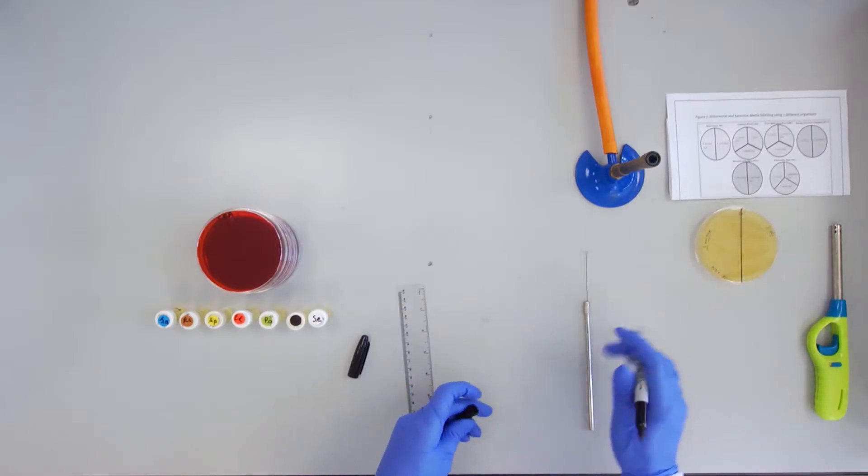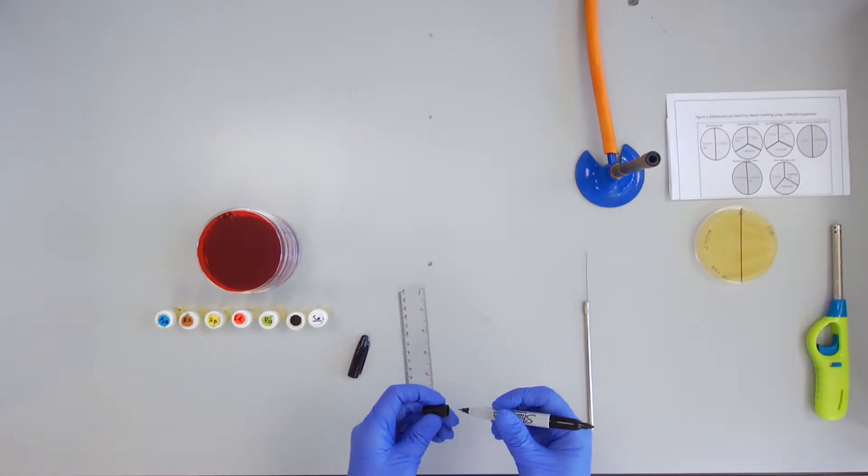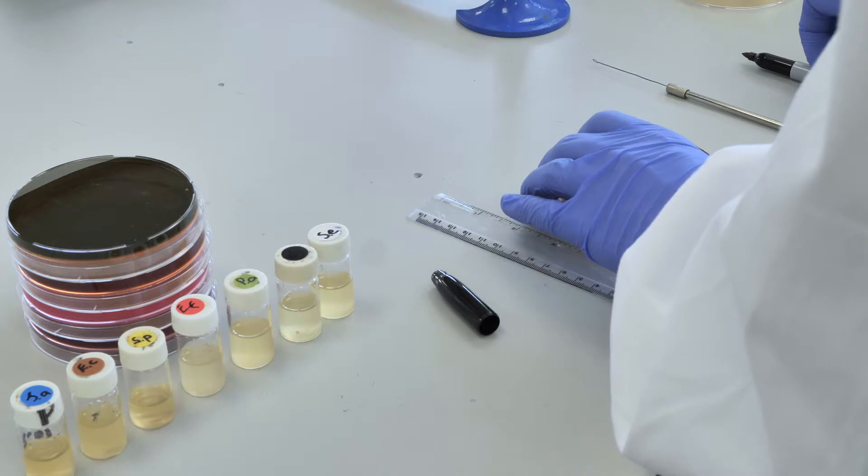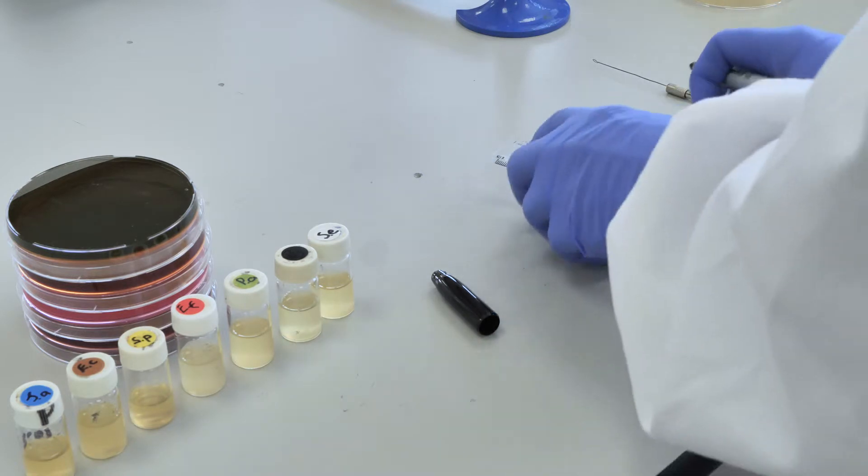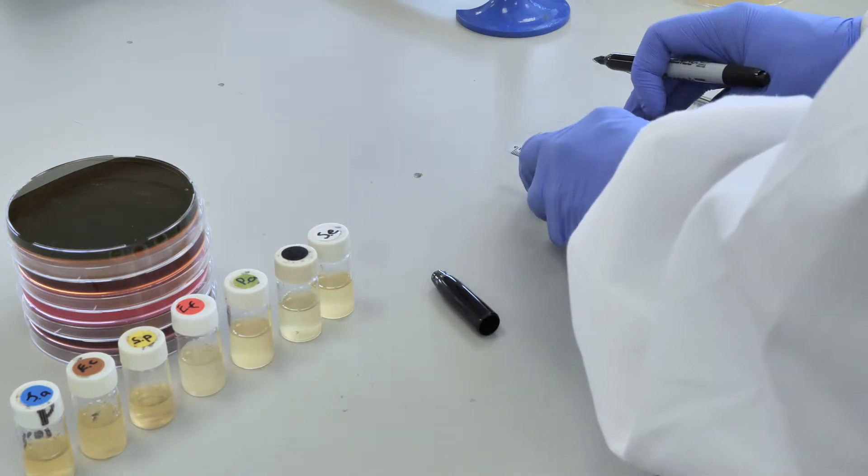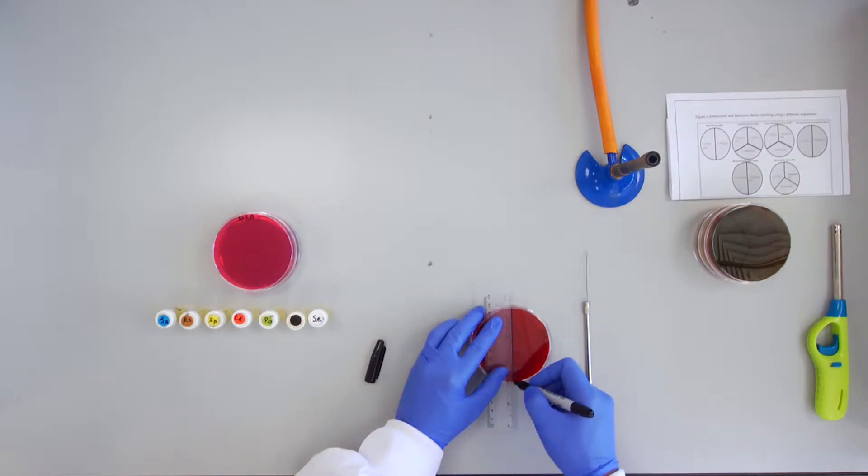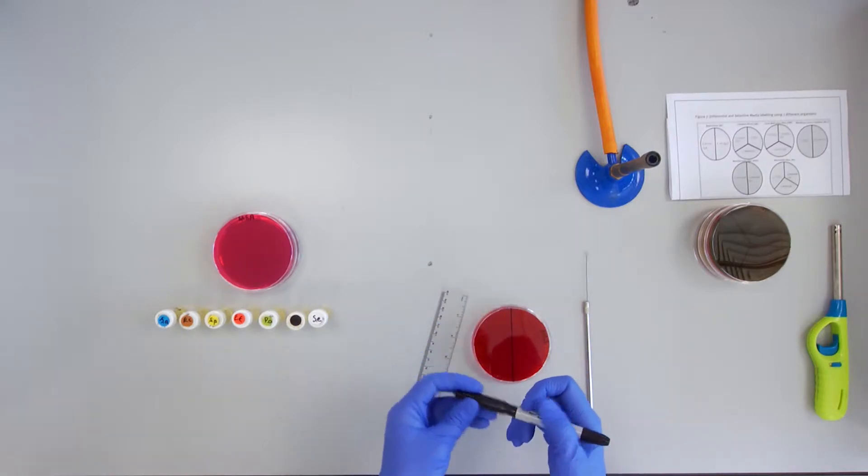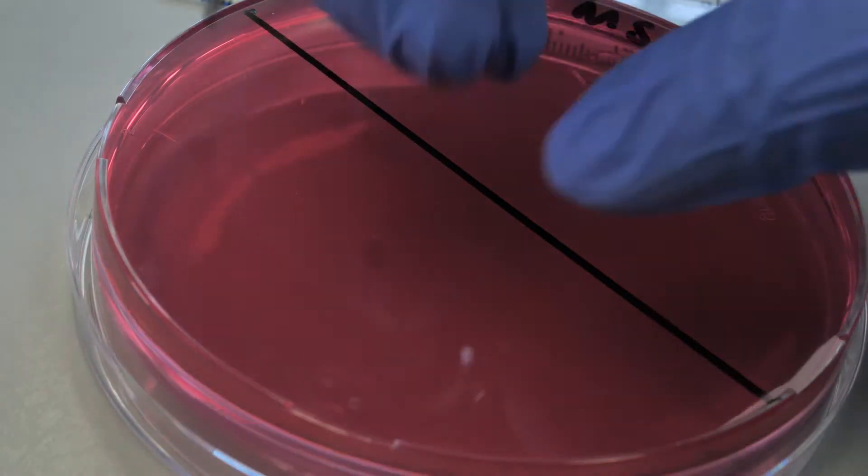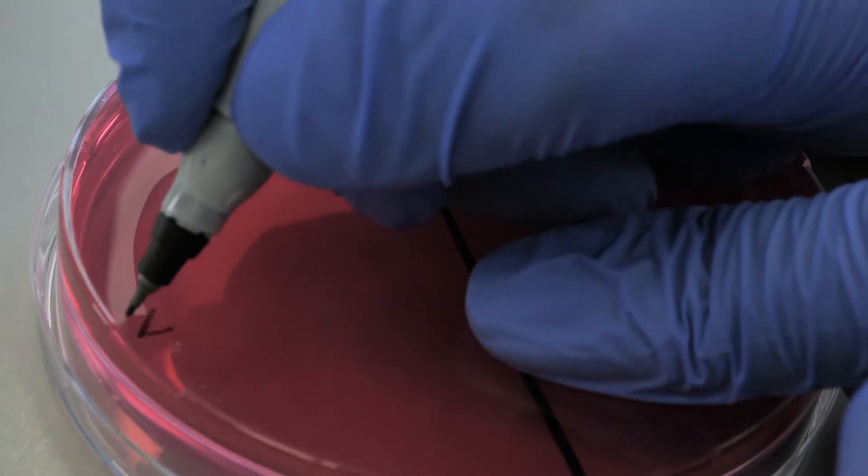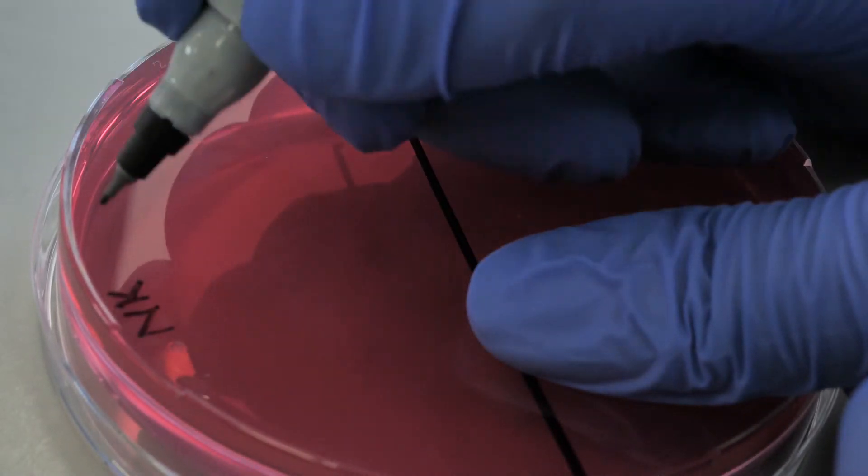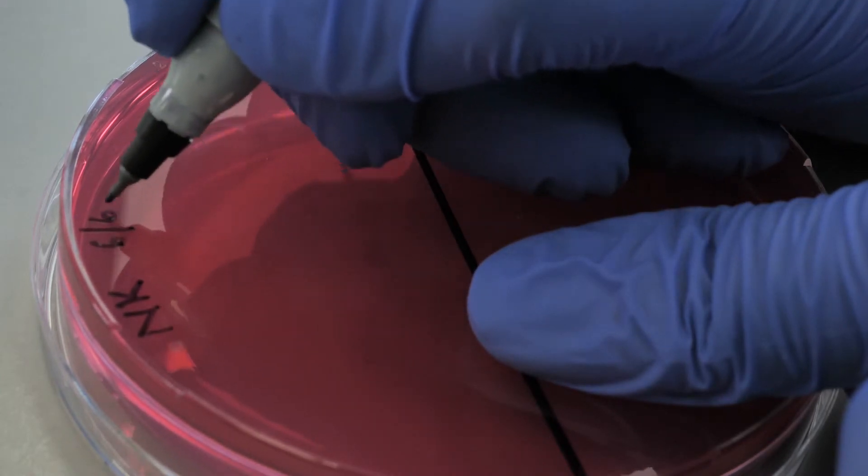Two or three cultures will be spread on each, so the plate must be divided into the correct number of sections and labeled with the cultures to be inoculated. Include your initials and the date on each plate also.